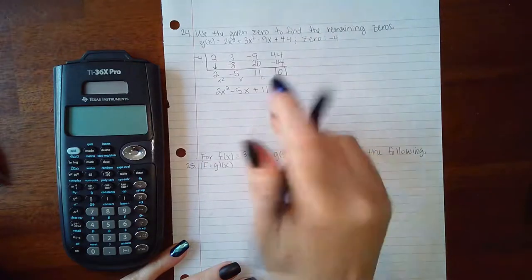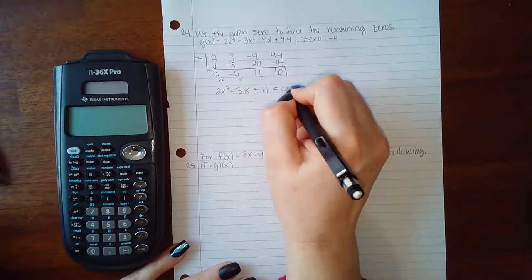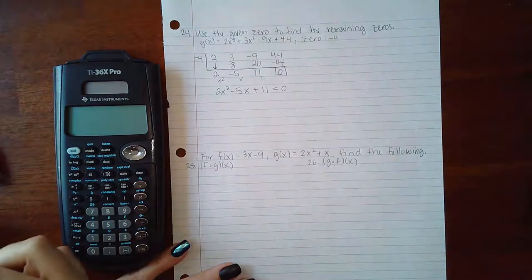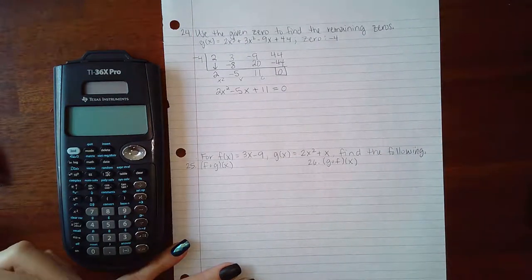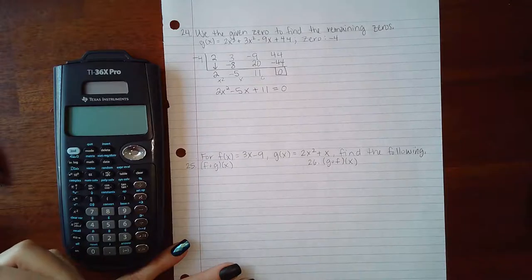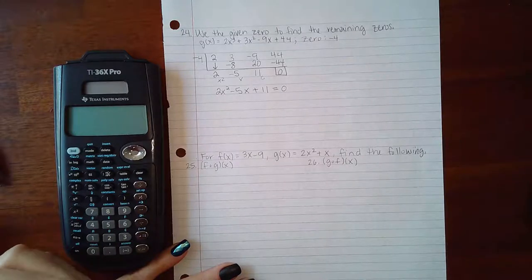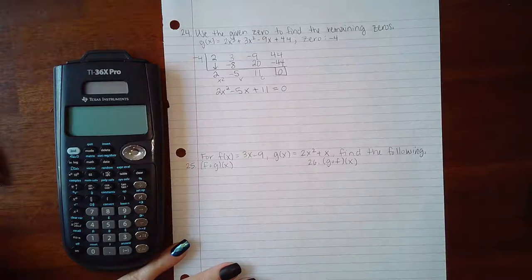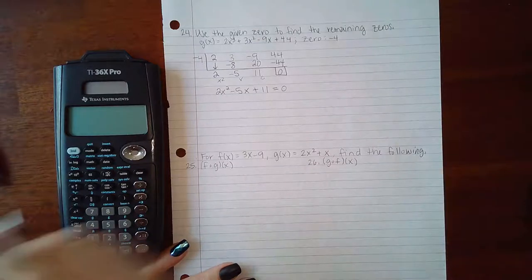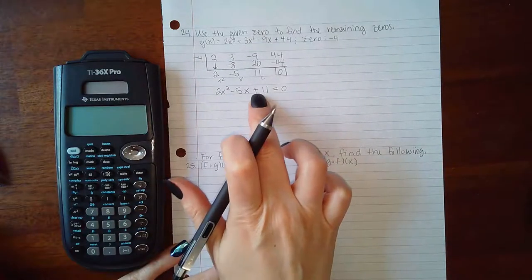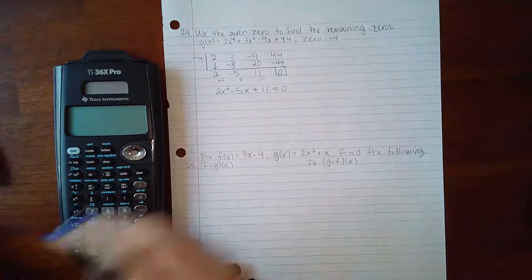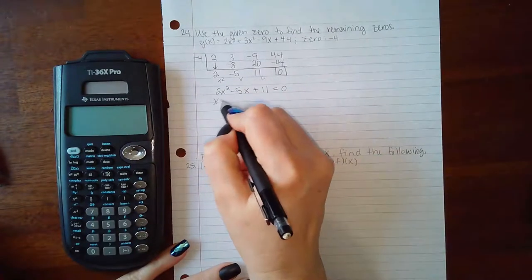2x squared minus 5x plus 11. And if I want to find the other zeros I need to figure out when this quadratic equals 0. Now if you can factor this, fantastic. If you cannot factor it then you need to use your quadratic formula. I do not believe this is going to factor. There are no factors of 22 that will add to give me 5. So I'm going to use my quadratic formula.